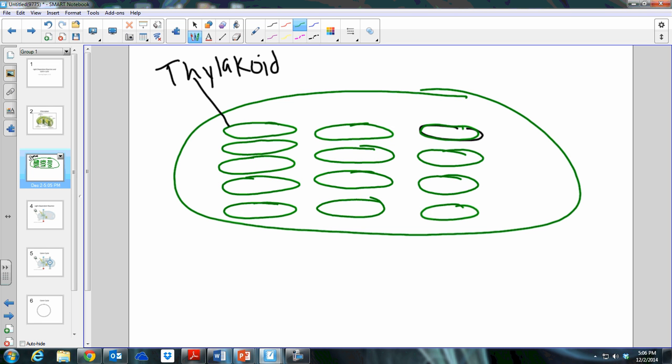A stack of these thylakoids is called a granum, or grana for plural. The inside of the thylakoid membrane is called the lumen. The lumen is a space where a concentration gradient is built up. The space inside the chloroplasts that doesn't have anything to do with thylakoids is called the stroma, and the stroma is where the light-independent reaction or the Calvin cycle takes place.